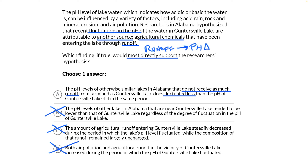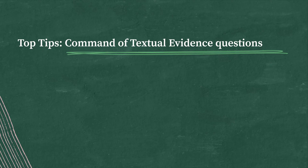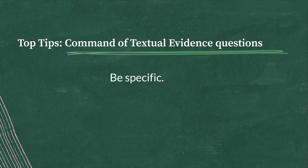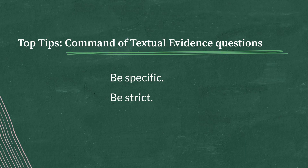Let's talk through a couple of top tips for questions like these. Top tip number one: be specific. You are looking for an answer choice that supports the claim in the question stem — nothing more, nothing less. Any choices that introduce a new idea can be eliminated. Top tip number two: be strict. Anything that feels like it's almost evidence for the claim is going to be too weak to be the answer. The answer needs to be all right, not just partly right. Good luck out there, test takers — you've got this.